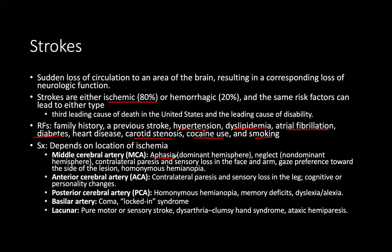Broca's and Wernicke's area are firmly within that MCA territory. A global aphasia would involve the abilities to produce speech, acalculia, hemi-neglect. When you have global aphasia, it's really affecting all of these upper processing functions.